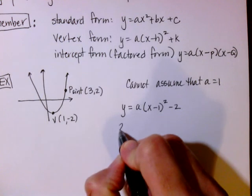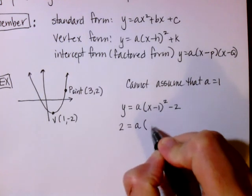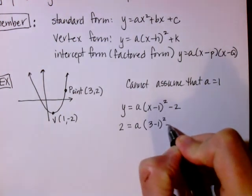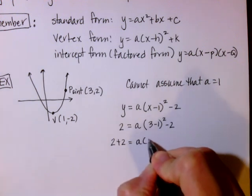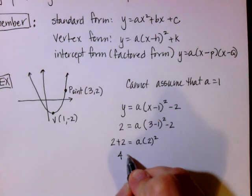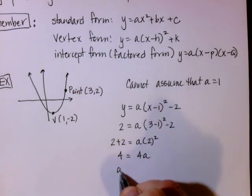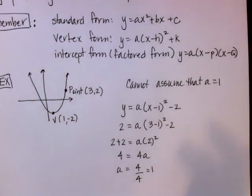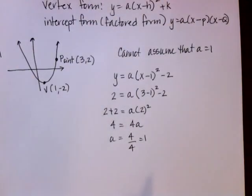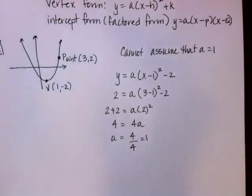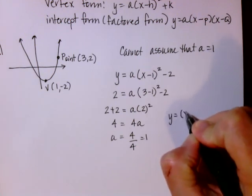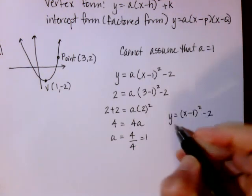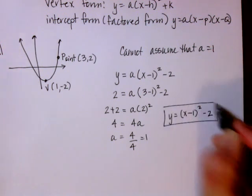Substituting the point (3, 2): 2 equals a times (3 minus 1) squared, minus 2. Adding 2 to both sides, I get 4 equals a times 2 squared, which gives 4 equals 4a, so a equals 1. It just so happens this one turned out that way — you can't assume a is always going to equal 1. My final equation in vertex form is y equals (x minus 1) squared minus 2.